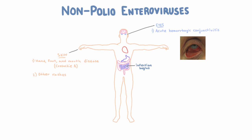Now getting more serious, enteroviruses can also go to the heart, where they can infect muscle fibers, which we call myocarditis. This is very important because it can cause heart failure in someone who's young or who has no ischemic heart disease. Coxsackie B is usually the most common culprit.